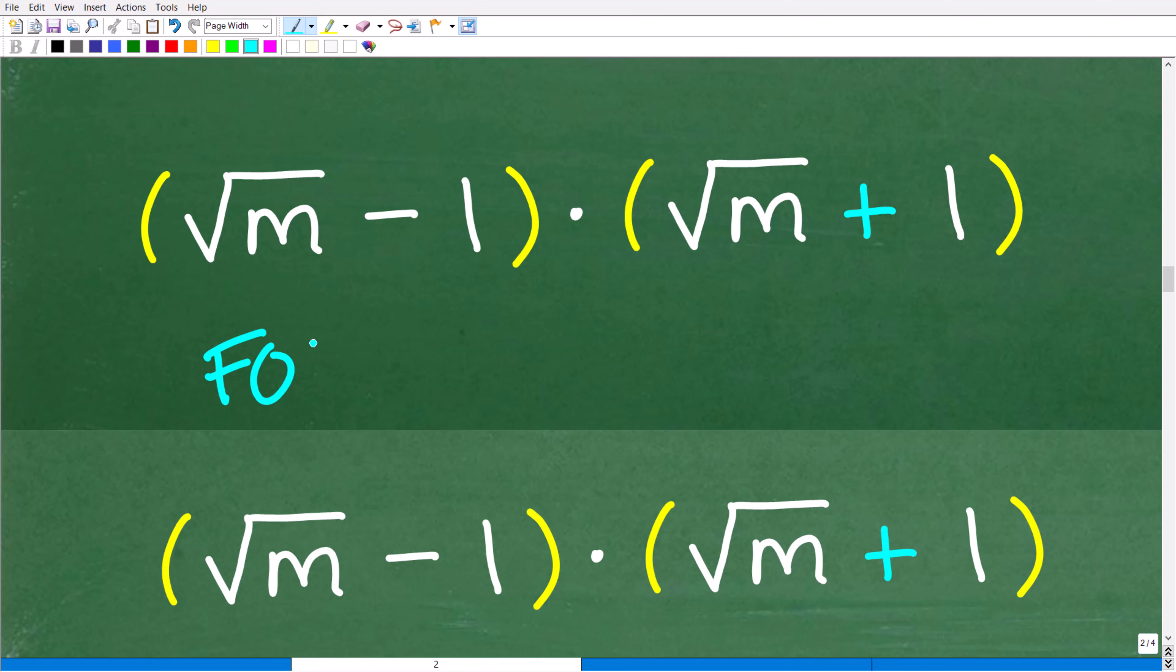You can use the FOIL method - first, outer, inner, last. Or you can use the difference of two squares: a squared minus b squared is equal to a plus b times a minus b.